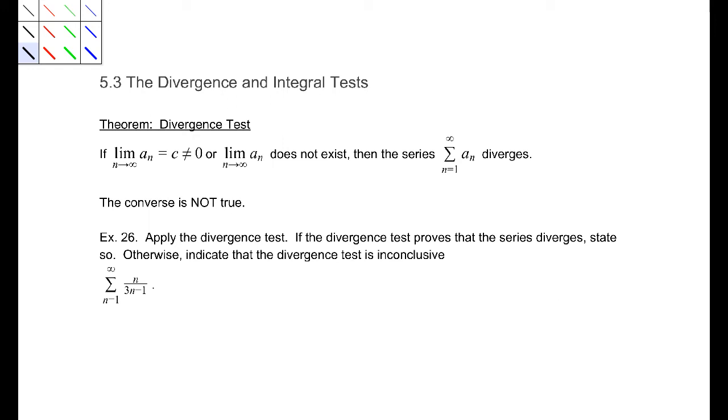Now, let's apply the divergence test to this sequence. If it proves that it diverges, we're going to state that it does. Otherwise, indicate that it's inconclusive, because it doesn't give us any information if it doesn't go to zero. Alright, so the limit as n goes to infinity of n over 3n minus 1, that corresponding sequence,